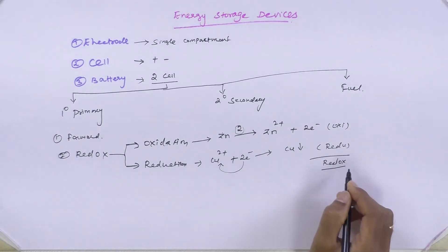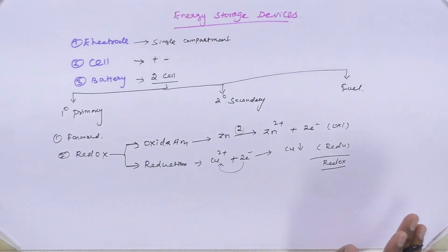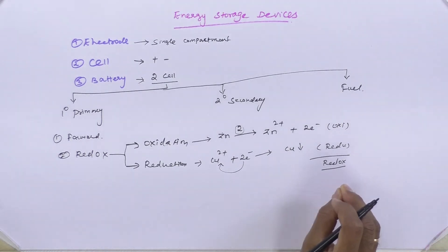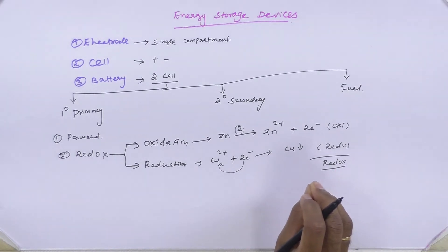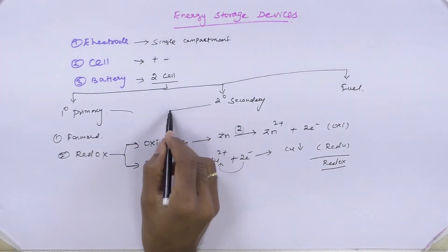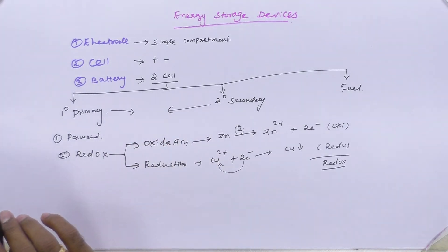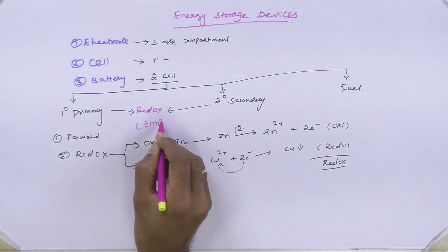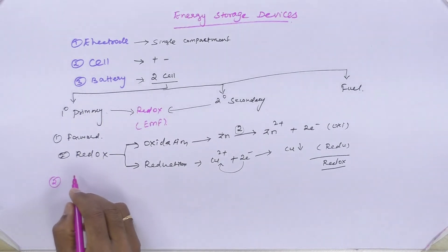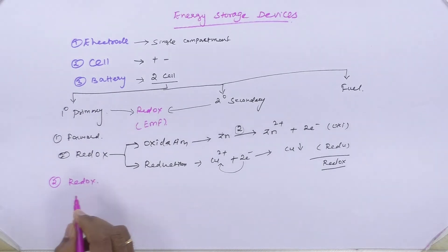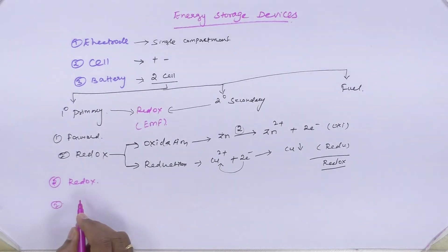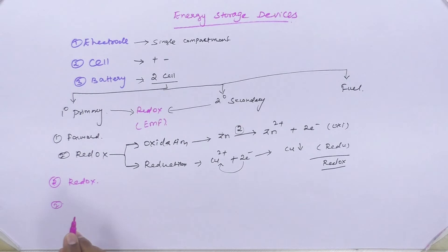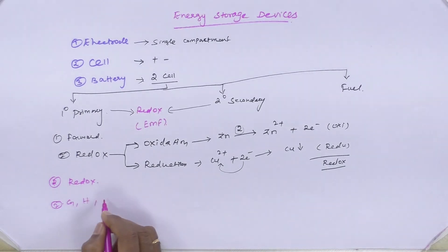A redox reaction means both oxidation and reduction occur simultaneously in the particular electrochemical system. This kind of redox reaction is highly responsible for the production of EMF in both primary and secondary cells. There are two reasons for EMF production: one is due to the redox reaction, and the second is due to the decrease in the free energy of the system. Whenever any type of chemical reaction takes place inside the cell compartment, there will be a change in thermodynamic parameters such as Gibbs free energy, enthalpy, and entropy.